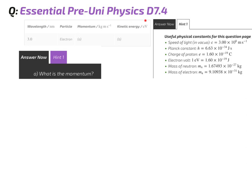This is Isaac's physics question D7.4. Pause the video and read the question. So we have to work out the momentum of this electron, and all we know about it is its wavelength, and we also know its mass. We don't know its velocity though.